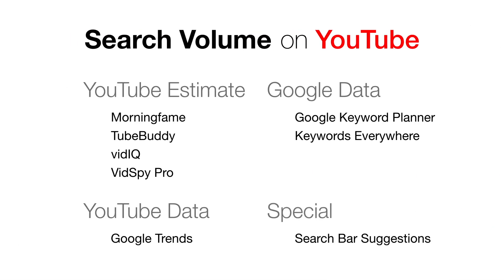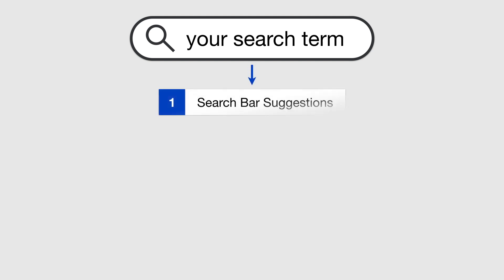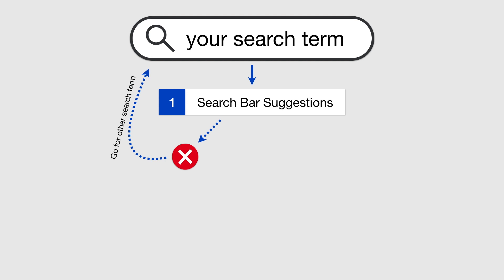And finally there are the search bar suggestions. These are something special, and I will talk about them in a minute since they are really useful. Back to the question: which tool should you use to determine the search volume? Step one is to use the search bar suggestions to find out if the search term is commonly used. You may find out that it is not, then you have to look for a different search term — no use optimizing your video for a search term that no one is searching. But if the search bar suggestions tell you that it is indeed a commonly used search term, then go ahead.